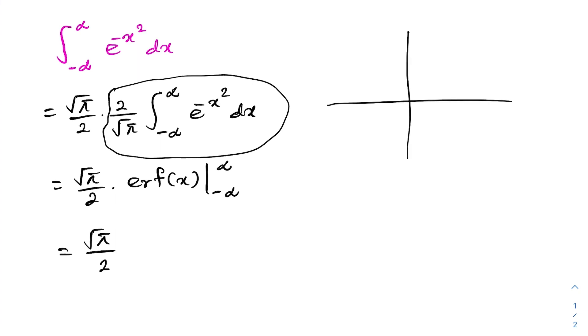Now, if we look at the graph of erf of x, we know here 1, here minus 1. So, the graph looks like this.